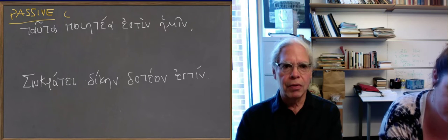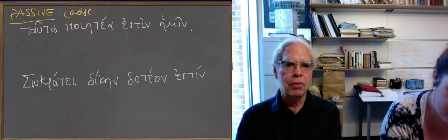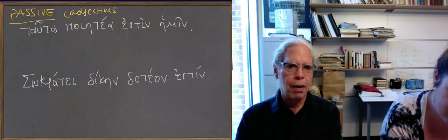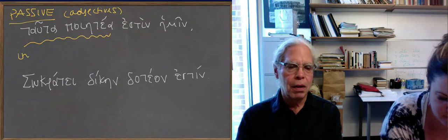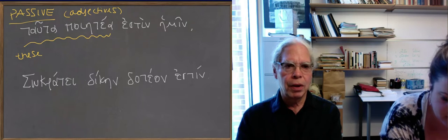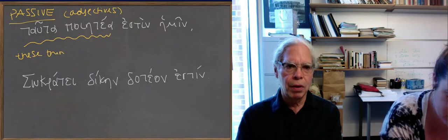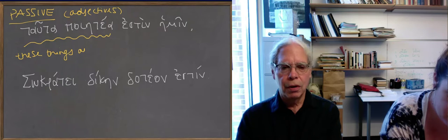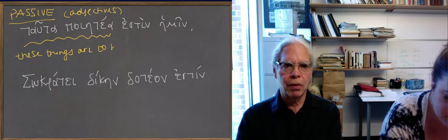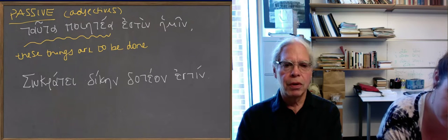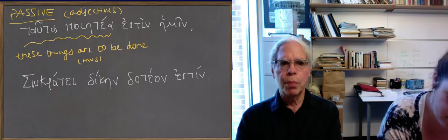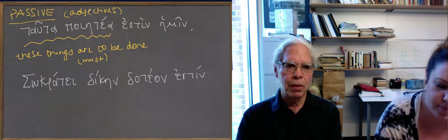So tauta poetea estin hemin means these things are to be done by us. It's a dative of agent, hemin. Tauta is the subject, poetea is the adjective agreeing with it. Estin is your neuter - since it's a neuter plural subject, you have a singular verb. So these things are to be done by us, or you can translate it, we must do these things, turning it into an active statement.